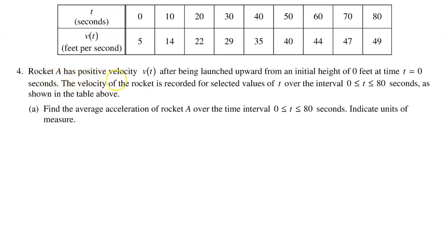Rocket A has a positive velocity v of t after being launched upward from an initial height of zero feet at time t equals zero seconds. The velocity of the rocket is recorded for selected values of t over the interval from zero to 80 seconds, as shown in the table above. Part A: find the average acceleration of Rocket A over the time interval from zero to 80 seconds. Indicate units of measure.